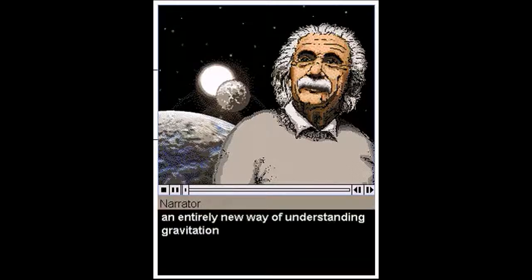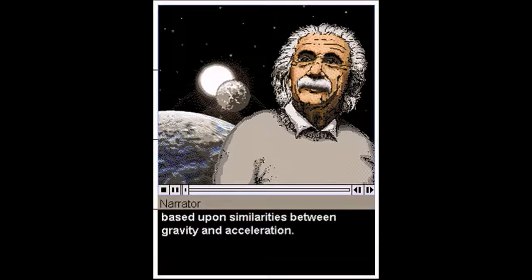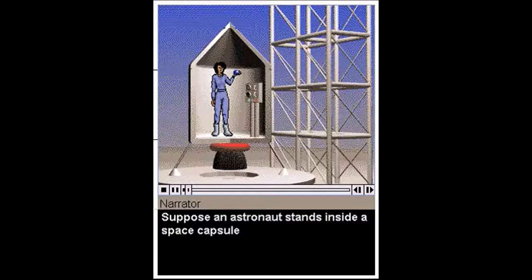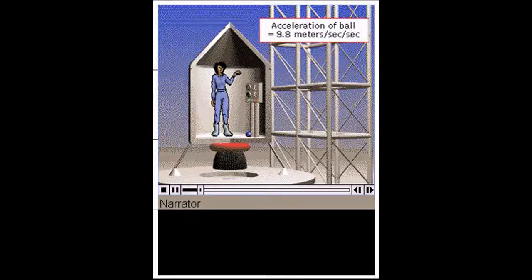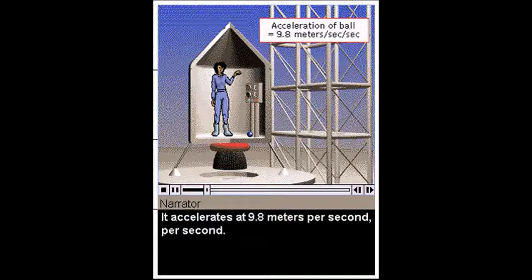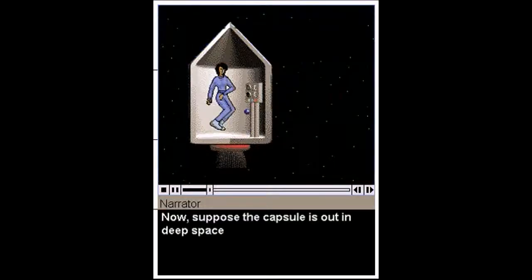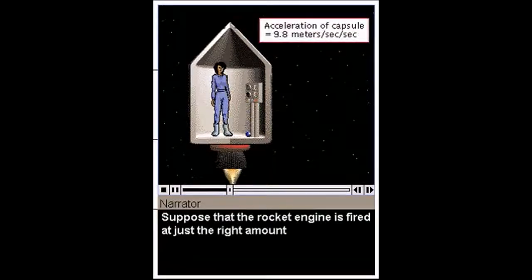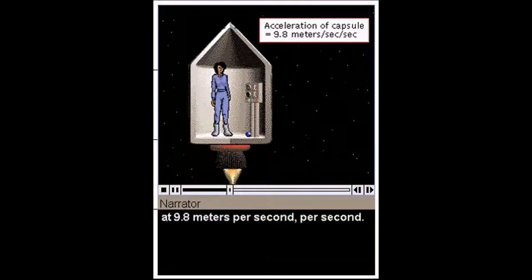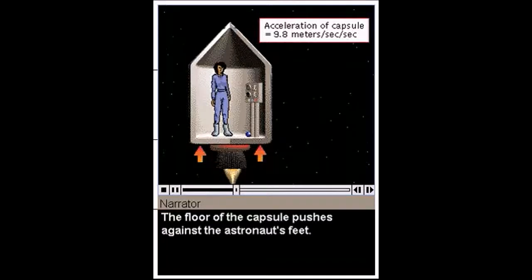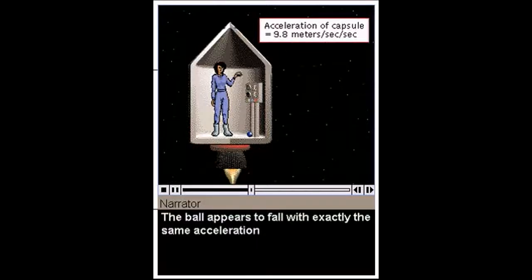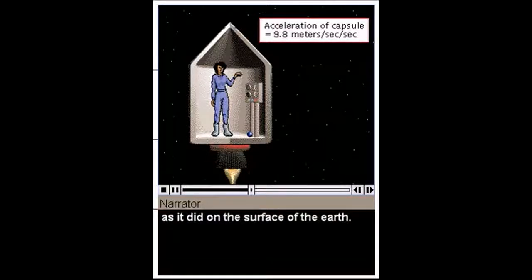Albert Einstein proposed an entirely new way of understanding gravitation based upon similarities between gravity and acceleration. Suppose an astronaut stands inside a space capsule at rest on the Earth. She drops a ball. It accelerates at 9.8 meters per second, per second. Now, suppose the capsule is out in deep space, far from any stars or planets. The astronaut and ball are both weightless. Suppose that the rocket engine is fired at just the right amount to cause the capsule to accelerate at 9.8 meters per second, per second. The floor of the capsule pushes against the astronaut's feet. To her, it feels the same as if she were standing on the Earth. The ball appears to fall with exactly the same acceleration as it did on the surface of the Earth.